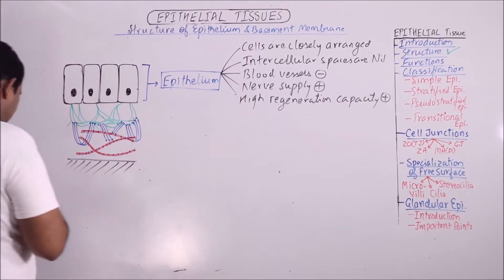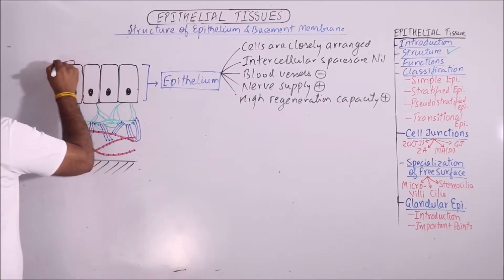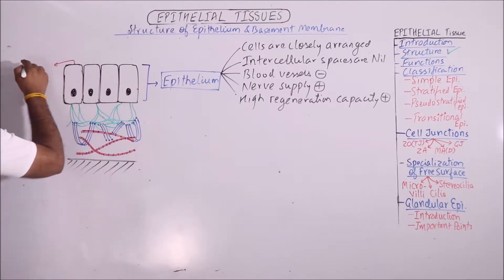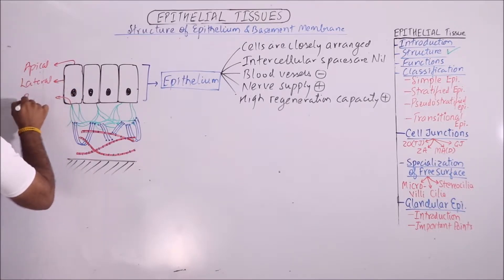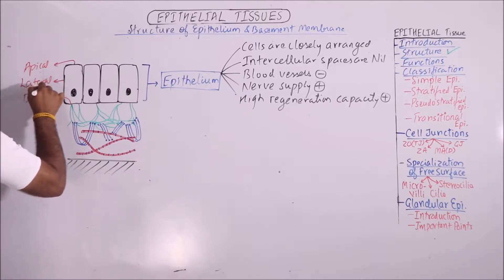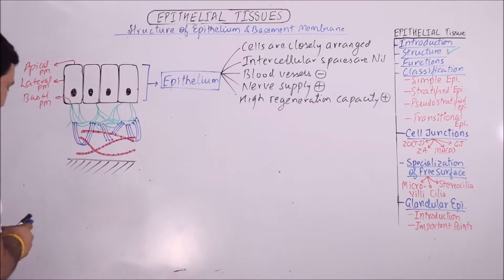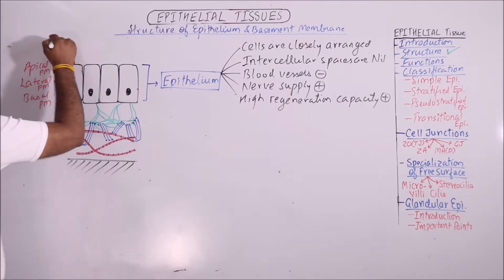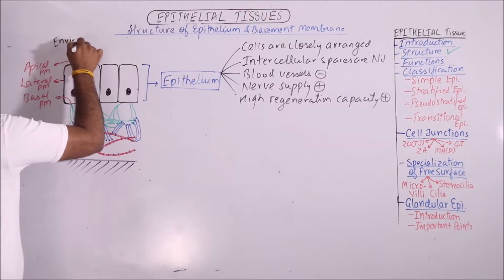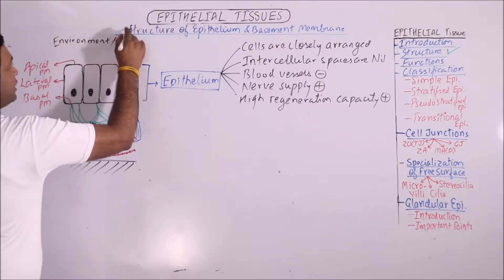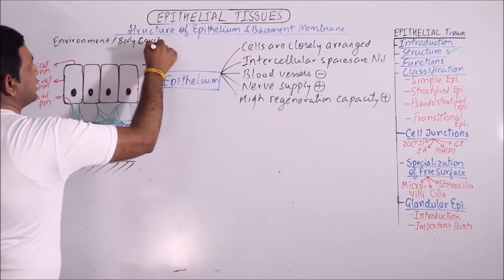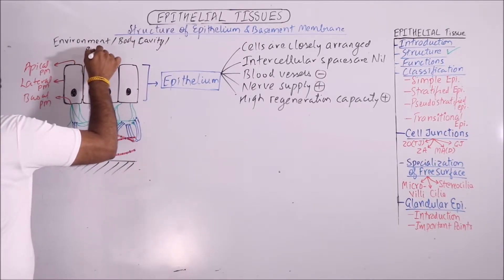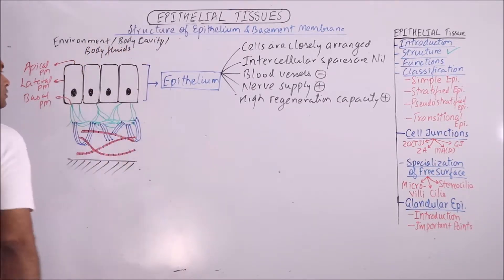If you observe an epithelium cell, the plasma membrane can be said to be apical, lateral, or basal. The apical plasma membrane is exposed either to the environment, as in the case of skin epithelia, or to body cavities, as in the case of mucosal epithelia, or to some body fluids, as in the case of epithelia of blood vessels and lymphatic vessels.